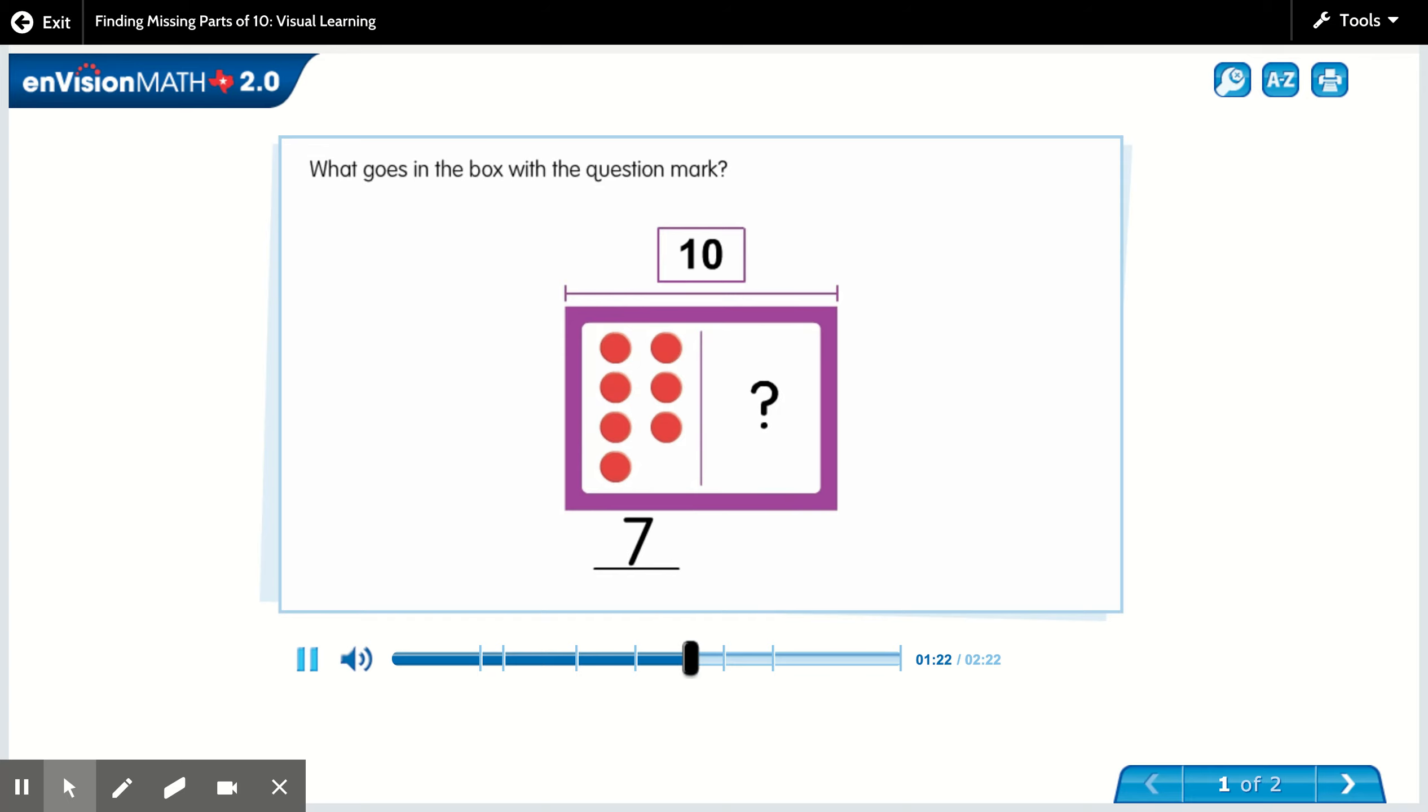What goes in the box with the question mark? The missing part goes in the box. What is the missing part? The missing part is three.